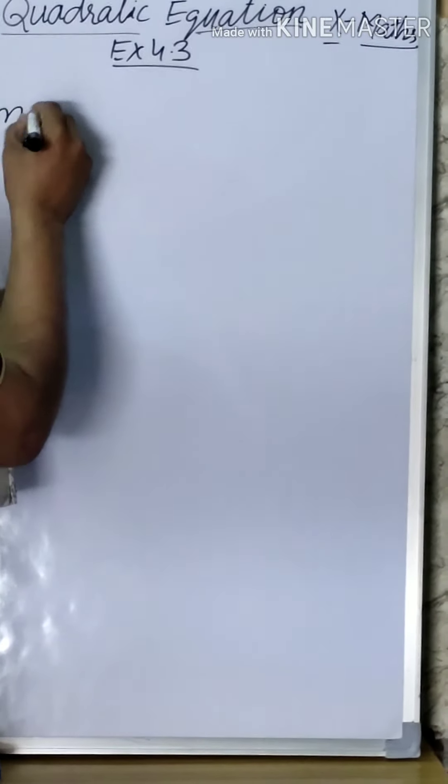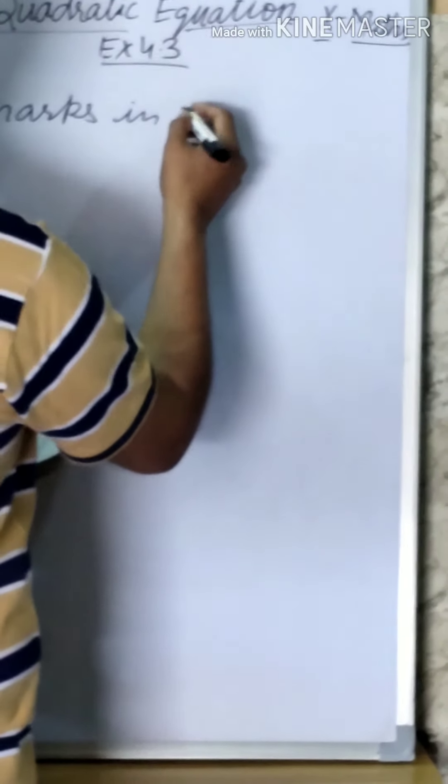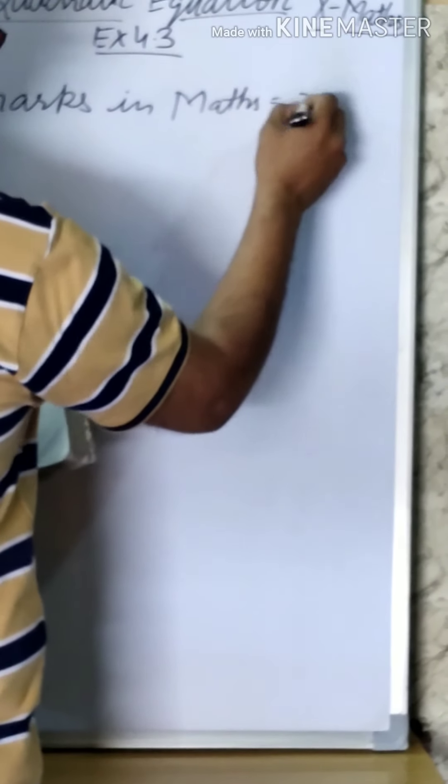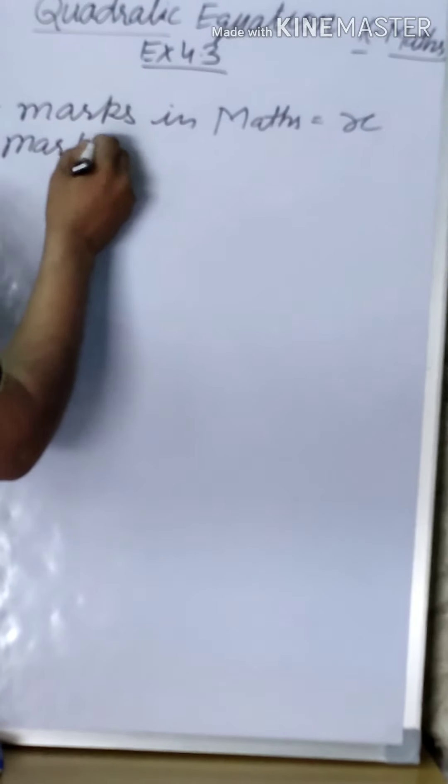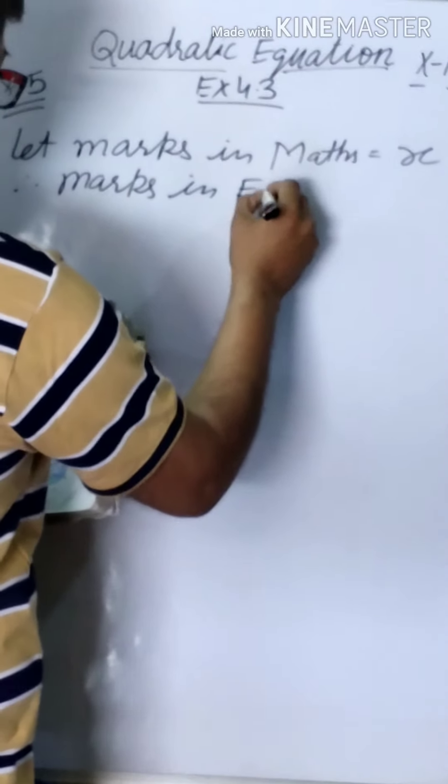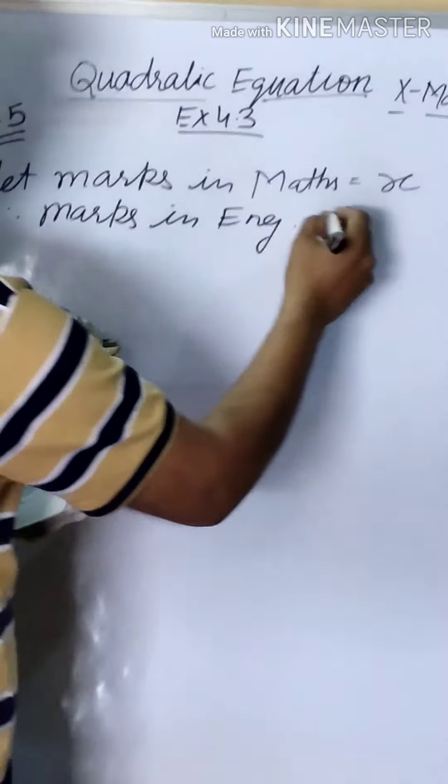What is the statement? In a class test, the sum of Shefali's marks in Mathematics and English is 30. Had she got two marks more in Mathematics and three marks less in English, the product of their marks would have been 210. Find her marks in the two subjects. So the total marks in two subjects is 30. Let marks in Mathematics = x. Therefore, marks in English = 30 minus x.